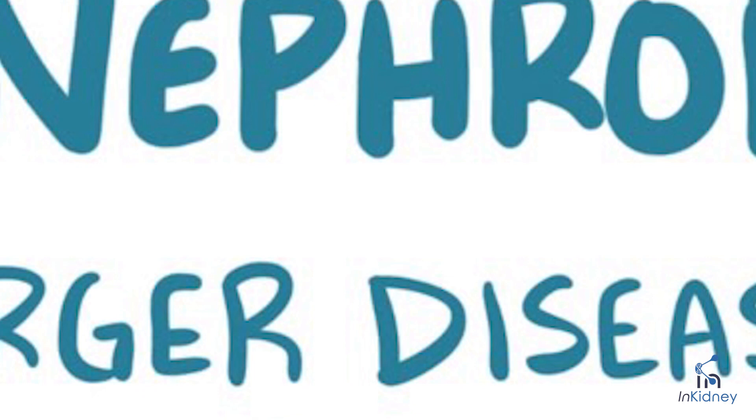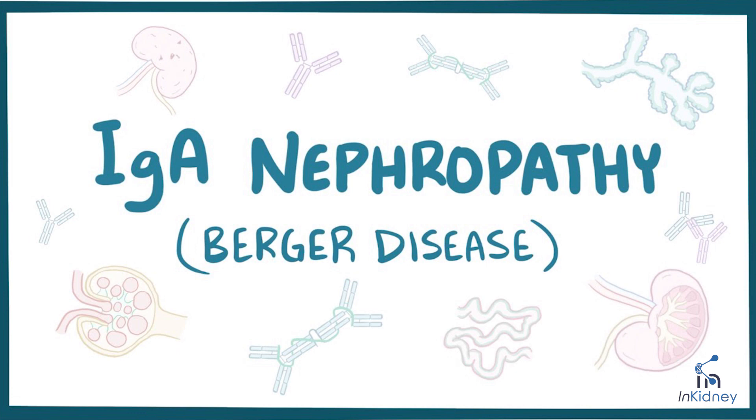What is IgA nephropathy? IgA nephropathy is really a fancy name for a kidney disease that is caused by IgA. A trigger can cause the body to produce an abnormal type of IgA that ends up going to the kidneys and causing inflammation, and ends up with kidney failure unfortunately. In essence, what is happening in IgA nephropathy is that there is a trigger causing the body to form an abnormal IgA molecule.